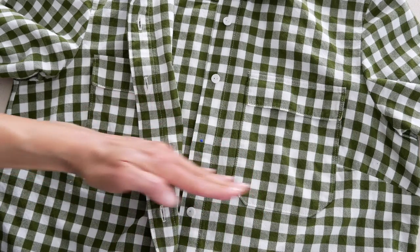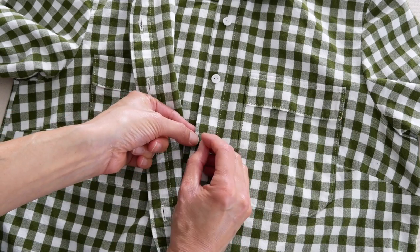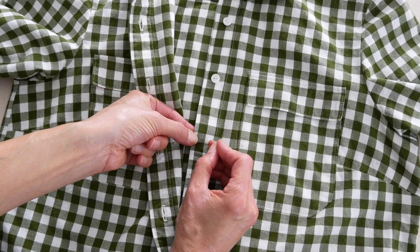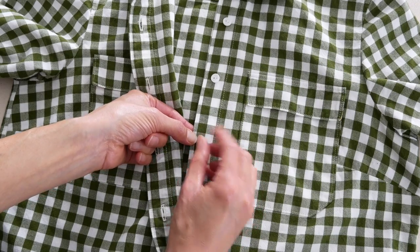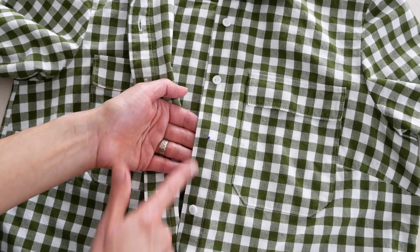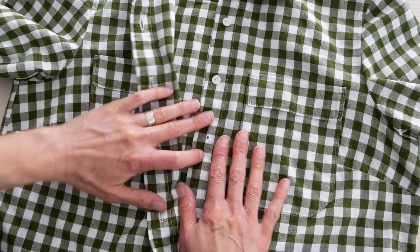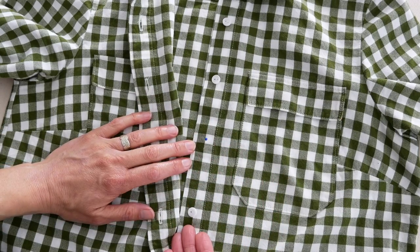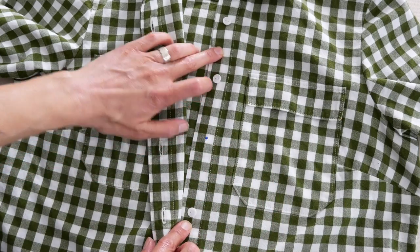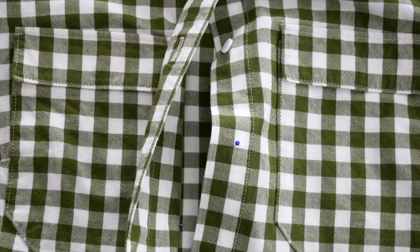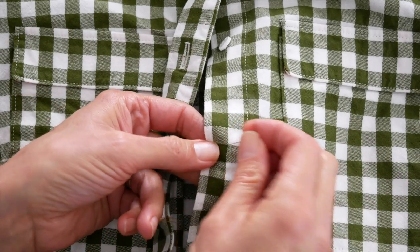So I know where the button goes height-wise on the garment, but I want to make sure that it is over the same distance as the other buttons. So on a garment like this that has these lines, I can easily see that. But you can also, of course, use a straight edge to make sure that the button placement is in the correct amount over.